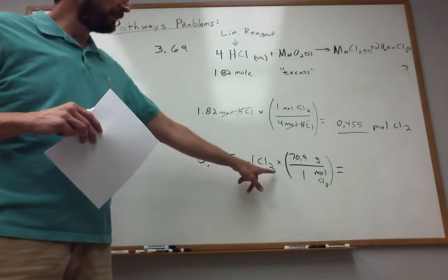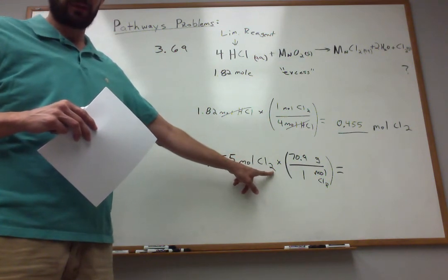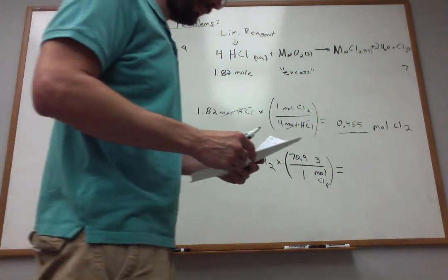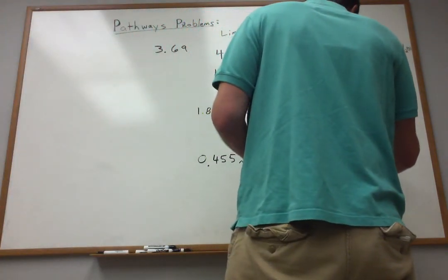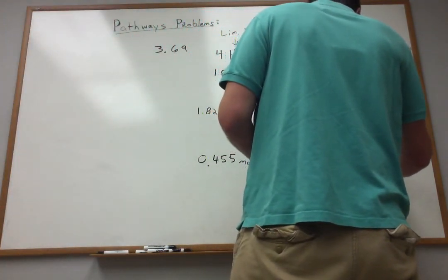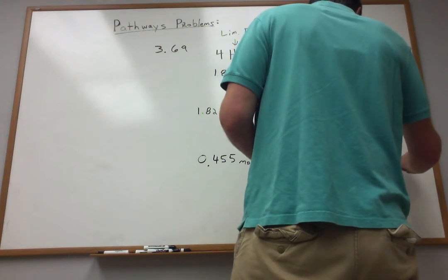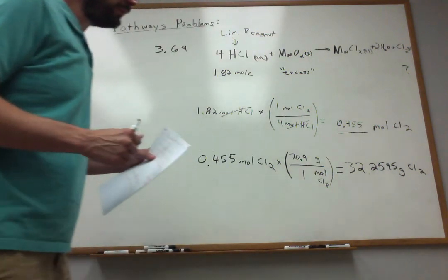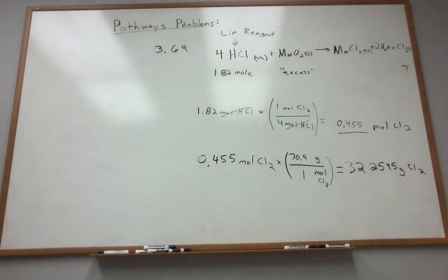I had to multiply it by 2 again because here I'm dealing with the diatomic chlorine. So it's 70.9 grams per mole. When I do the math on that, I find 32.2595 grams of Cl2 can be produced.